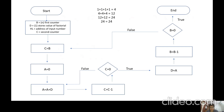To start with, let's first understand what a factorial of a number is. We all know that factorial of a number N is the product of all numbers from one to that number. So if we have to calculate the factorial of four, we will multiply one into two into three into four, which gives us 24.